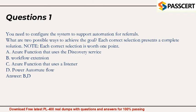Question 1: You need to configure the system to support automation for referrals. What are two possible ways to achieve the goal? Each correct selection presents a complete solution. Note: each correct selection is worth one point. A. Azure Function that uses the Discovery Service. B. Workflow Extension. C. Azure Function that uses a Listener. D. Power Automate Flow. Answer: B and D.